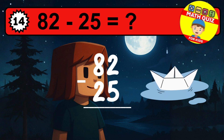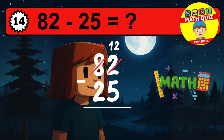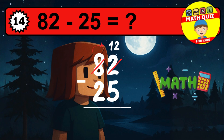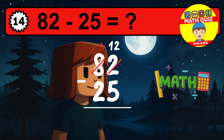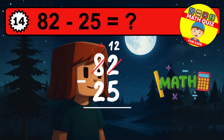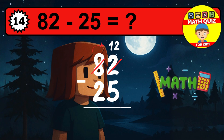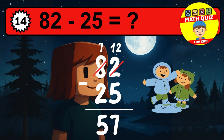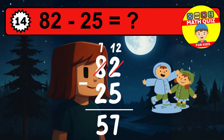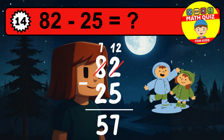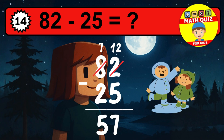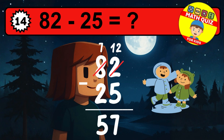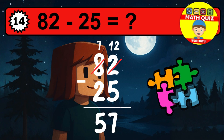Let's solve this step by step. We start with the units. Two minus five is not possible, so we need to regroup. We take one ten from the tens column. Now we have seven tens, and the units become twelve. Now we subtract. Twelve minus five is seven.